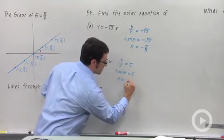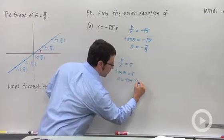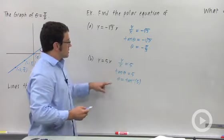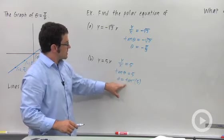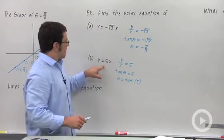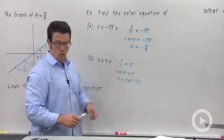I could write theta equals inverse tangent of 5 though, and that's a perfectly good equation. So this number is a constant, and so we have theta equals inverse tangent of 5. This is going to be the equation of the line y equals 5x in polar coordinates.